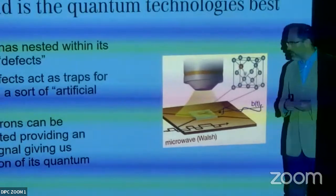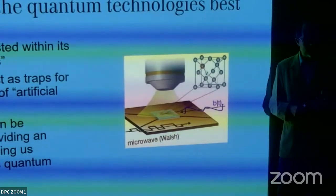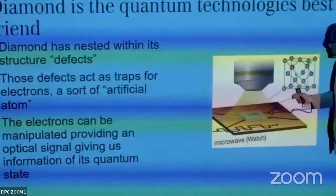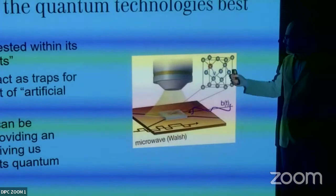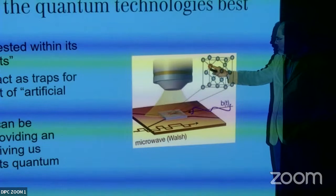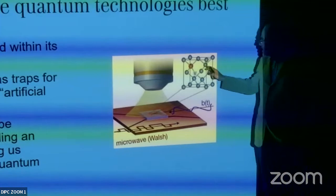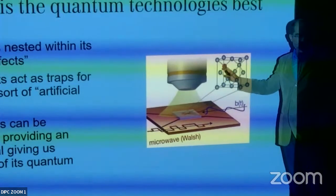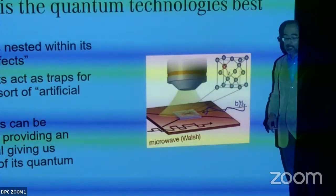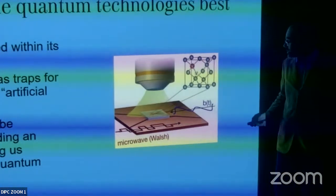Why diamonds? Pure diamond is a transparent carbon matrix, but the colors you see in some diamonds come from defects — for example, one carbon atom replaced by a nitrogen atom, creating a nitrogen-vacancy (NV) defect. Electrons are trapped in this gap — it's like an artificial atom in a solid state, and you can control many properties of these electrons at room temperature.